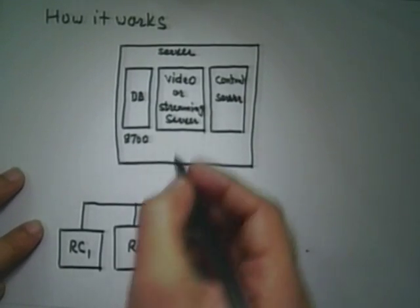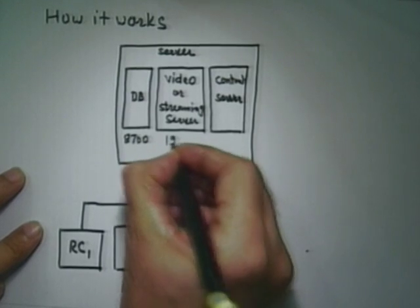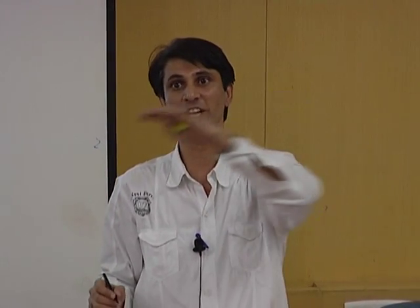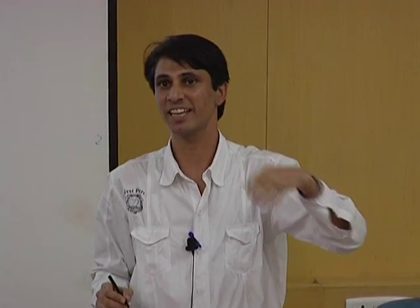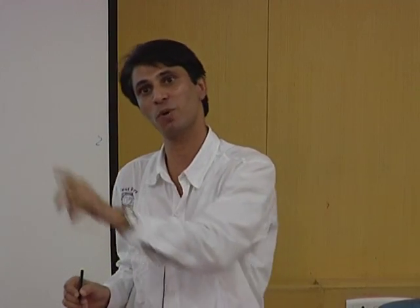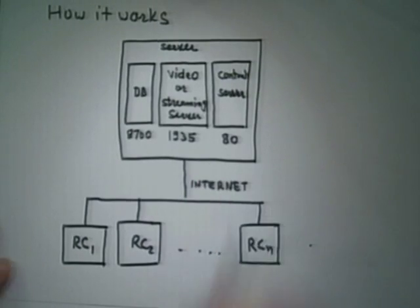The video server uses port number 1935. If login is successful but you cannot see users or your own institute name in the user list, that means port number 1935 is blocked. You have to open that port in the router and firewall. The content server works on port number 80, which is almost always open. This is the basic architecture of how AView works.